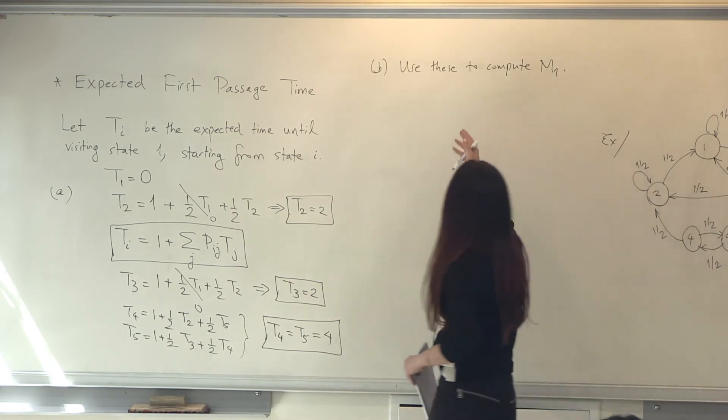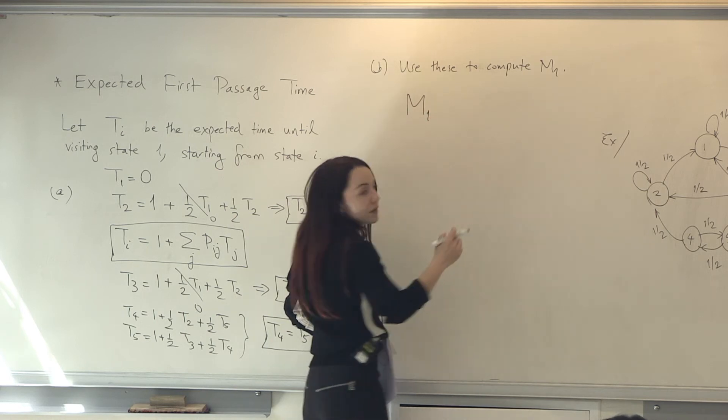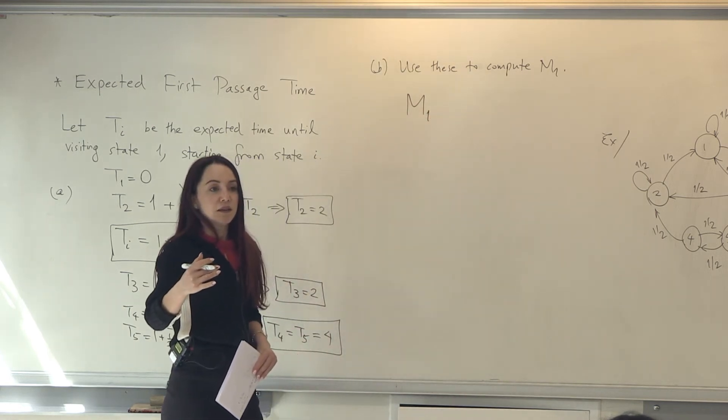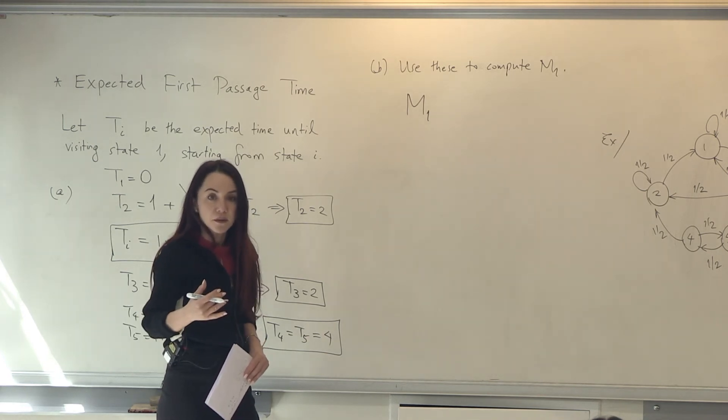But first of all, again, let's write a general expression. Well, M1 is the expected number of transitions from 1 back to 1, right?